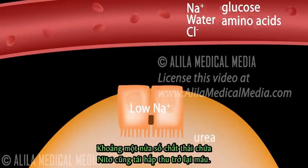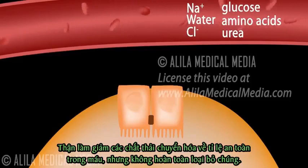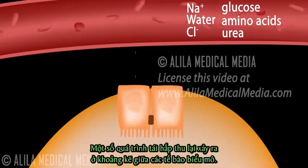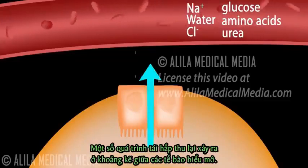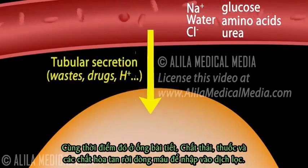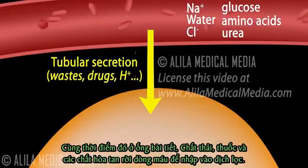About half of nitrogenous wastes also reabsorb back to the bloodstream. The kidneys reduce blood levels of metabolic wastes to a safe amount but do not completely eliminate them. Some reabsorption also occurs by the paracellular route, through tight junctions between the epithelial cells. At the same time, tubular secretion — where additional wastes, drugs, and other solutes leave the bloodstream to join the tubular fluid — also takes place.